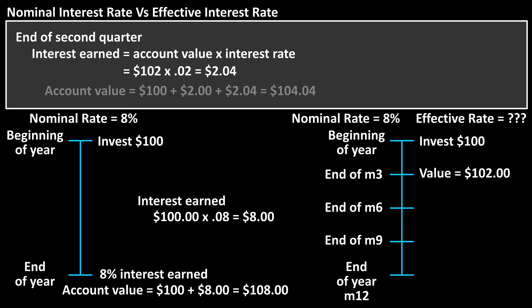So the account now has the $100 original investment plus the $2 of interest earned at the end of the first quarter, plus the $2.04 of interest earned at the end of the second quarter. And the total in the account is now $104.04.